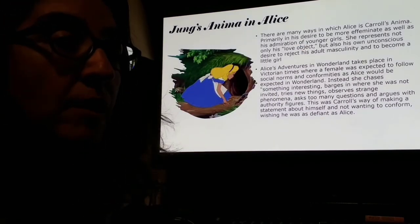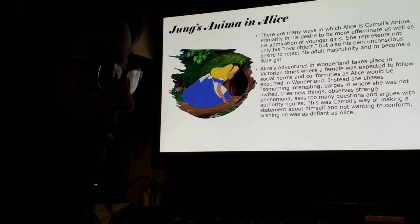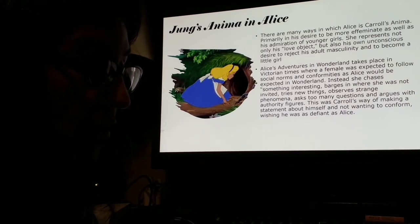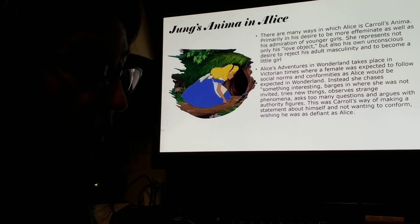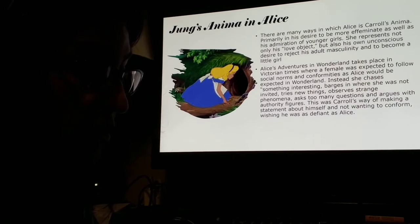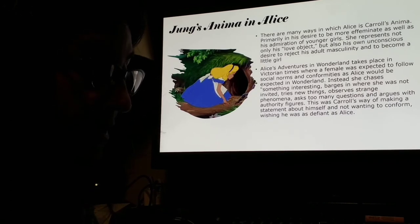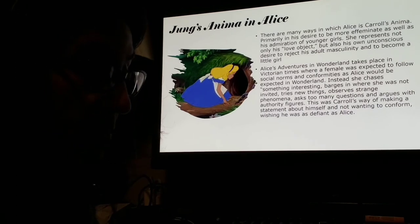Jung's anima is present in Alice in many ways, primarily in Carroll's desire to be more effeminate as well as his admiration of younger girls. Alice represents not only his love object but also his own unconscious desire to reject his adult masculinity and become a little girl. Alice's adventures in Wonderland take place in Victorian times, where a female was expected to follow social norms and conformities, as Alice would be expected to in Wonderland.